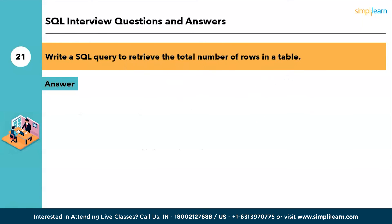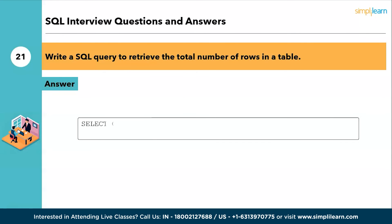The twenty-first question: write a SQL query to retrieve the total number of rows in a table. The answer is: SELECT COUNT(*) AS total_rows FROM your_table_name. Here, the COUNT function with * selects all rows in your table and names the result as total_rows. For example, if the table is 'department': SELECT COUNT(*) AS total_rows FROM department.